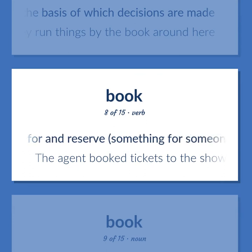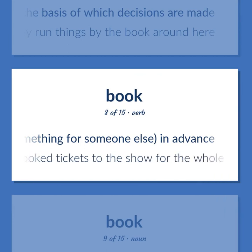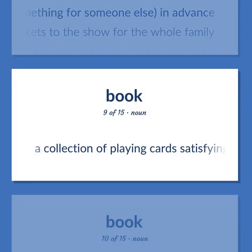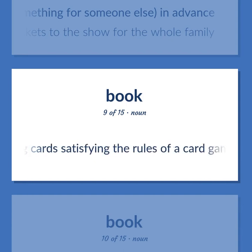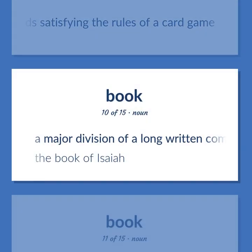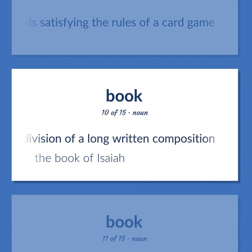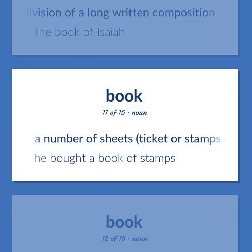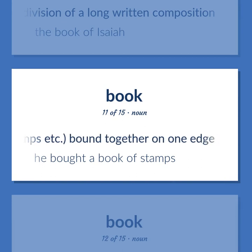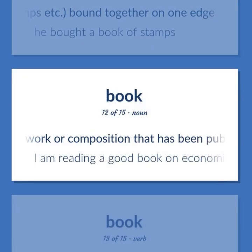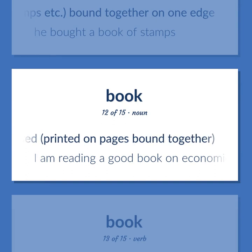Arrange for and reserve something for someone else in advance — the agent booked tickets to the show for the whole family. A collection of playing cards satisfying the rules of a card game. A major division of a long written composition — the Book of Isaiah. A number of sheets, tickets, or stamps bound together on one edge — he bought a book of stamps. A written work or composition that has been published, printed on pages bound together — I am reading a good book on economics.